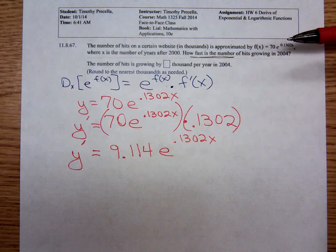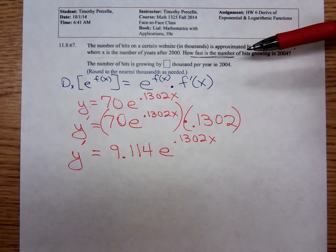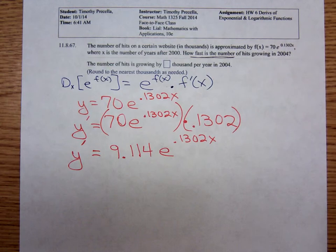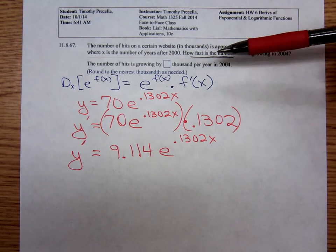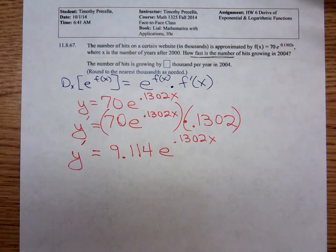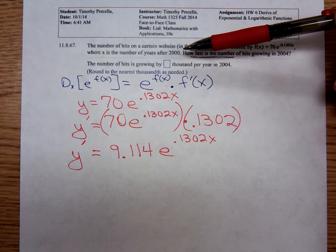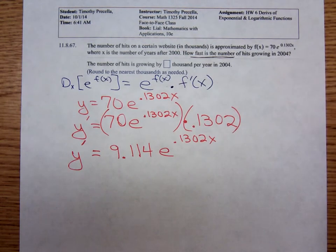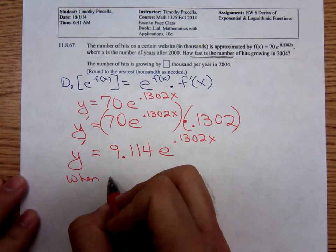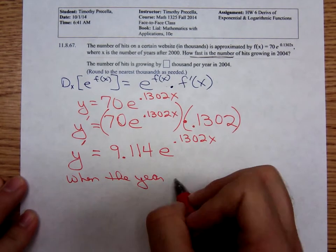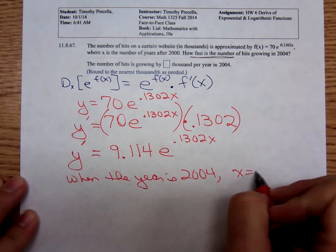Now we want to know how quickly the number of hits is growing in the year 2004. If x is the number of years after 2000, then what would x be for 2004? When the year is 2004, x is equal to 4.